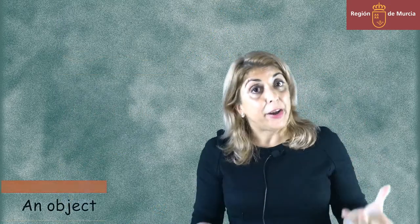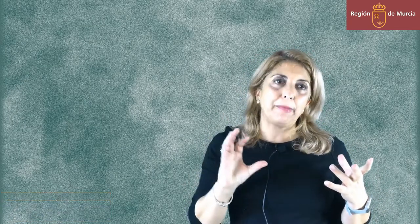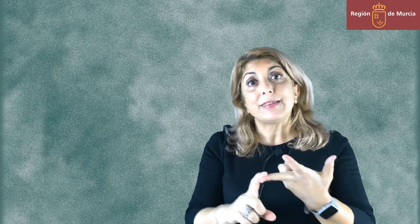When describing an object, we should include details related to size, pattern, weight, shape, what you use the object for, and when you use it. And for the place, focus on these elements: the special features of this place, why it's special for you, and it is worth mentioning all the details that make this place unique for you.